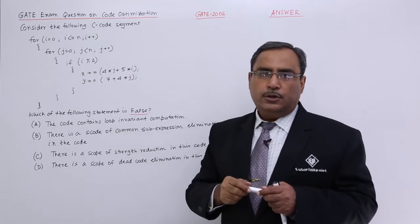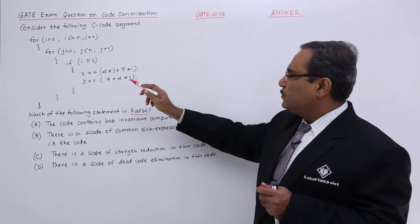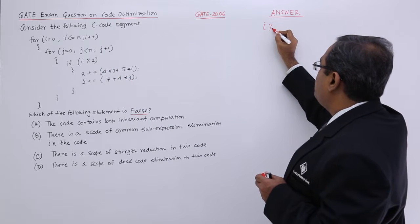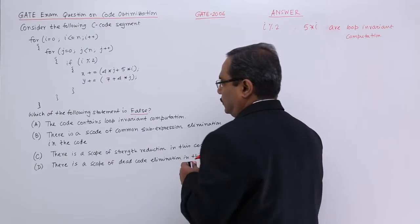That should be done here only. We are having two cases. I am just marking this one that is i percentage 2 and 5 star i.